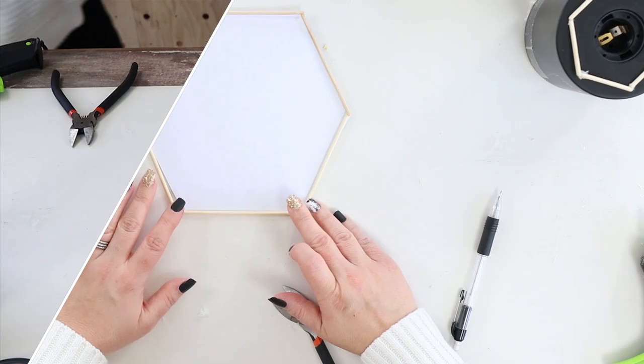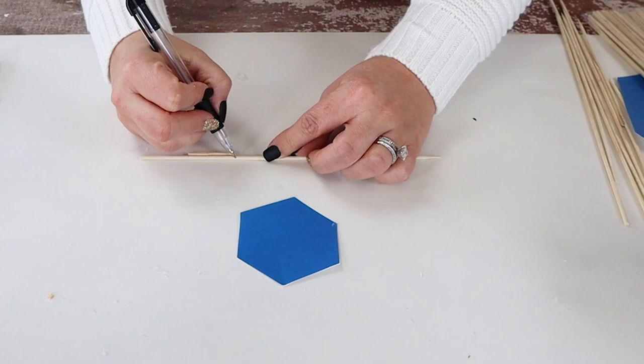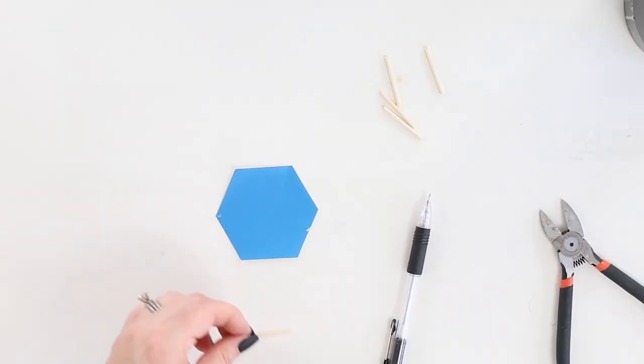Now I'm going to repeat that same step for the smaller hexagon, just marking and cutting them out so all of the pieces are the same size, and then I'll hot glue them together.